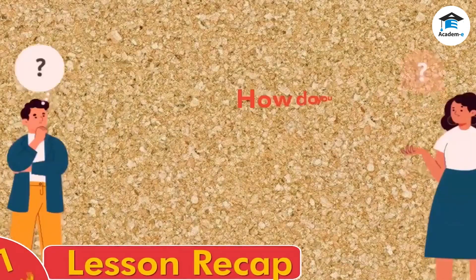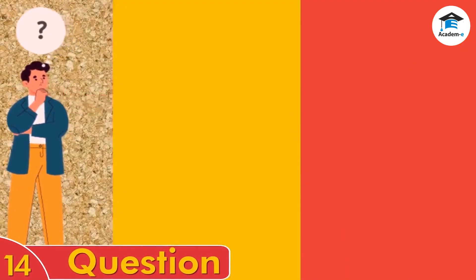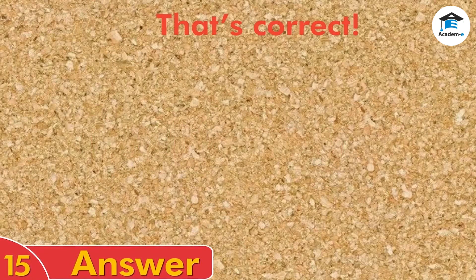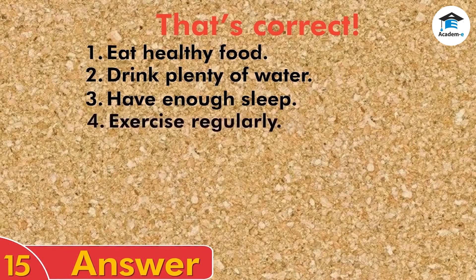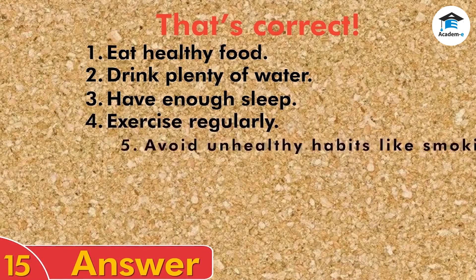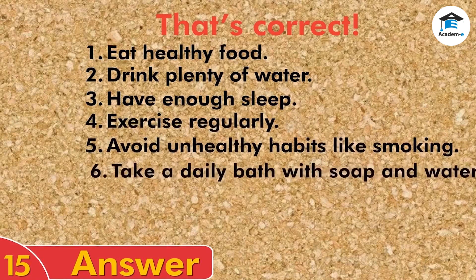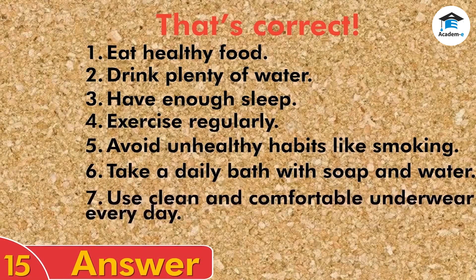Lesson recap. How do you take care of your reproductive system? That's correct — you take care of your reproductive system when you: 1) eat healthy food; 2) drink plenty of water; 3) have enough sleep; 4) exercise regularly; 5) avoid unhealthy habits like smoking; 6) take a daily bath with soap and water; 7) use clean and comfortable underwear every day.